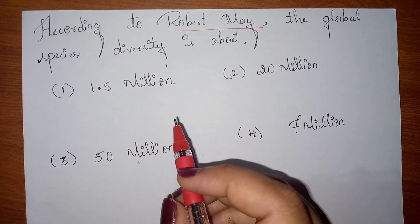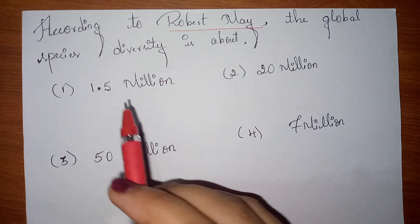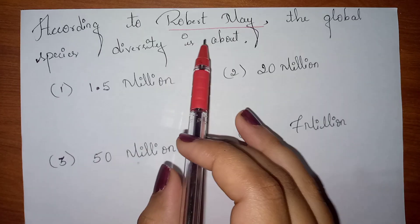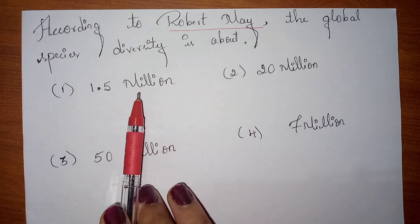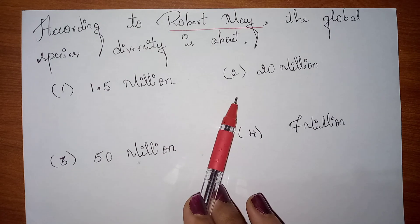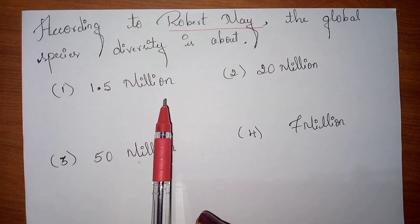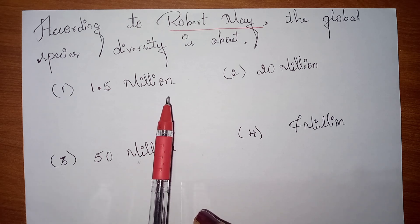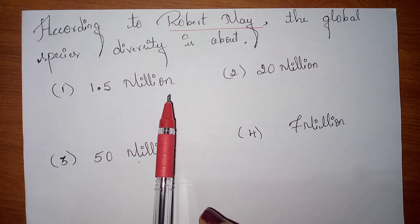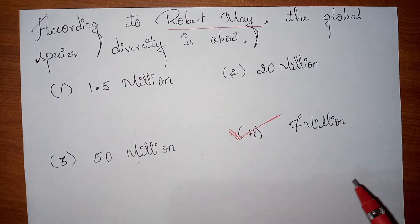Hello everyone, welcome to our channel. For more videos or NEET questions, subscribe our channel. The first question is: According to Robert May, the global species diversity is about - Option 1: 1.5 million, Option 2: 20 million, Option 3: 50 million, Option 4: 7 million. That means you are asking according to Robert May, what will be the number of diversity in the species in the global level.